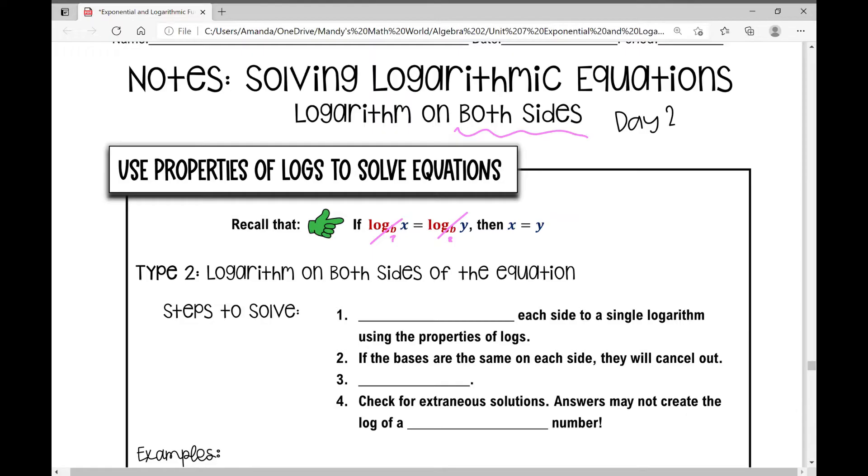Type two is logarithm on both sides of the equation. The steps that you're going to use to solve today are pretty much the same as what we did yesterday on day one. You're going to condense each side to a single logarithm using the properties of logs. If the bases are the same on each side they'll cancel out.